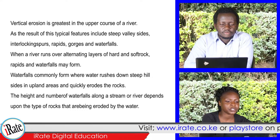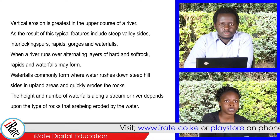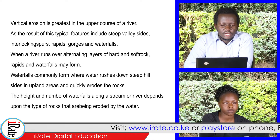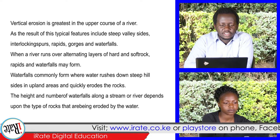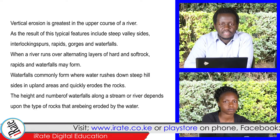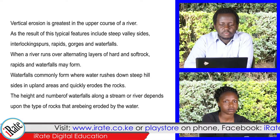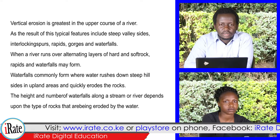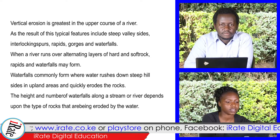Vertical erosion is greatest in the upper course of a river. As a result, typical features include steep valley sides, interlocking spurs, rapids, gorges, and waterfalls.